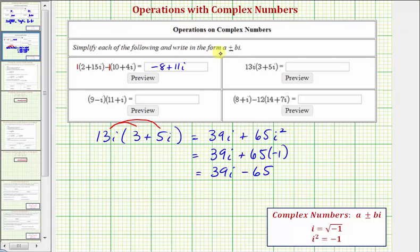So we should write it in the form of a plus or minus bi, where the real number is first and the imaginary number is second. So it's better to have this as negative 65 plus 39i.